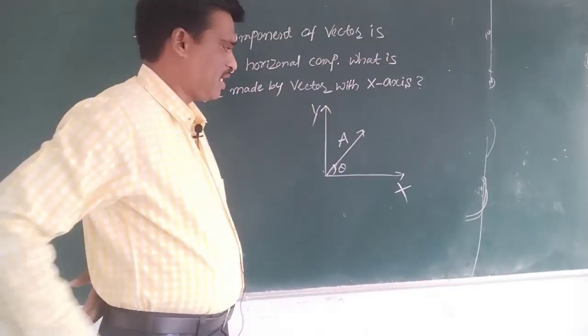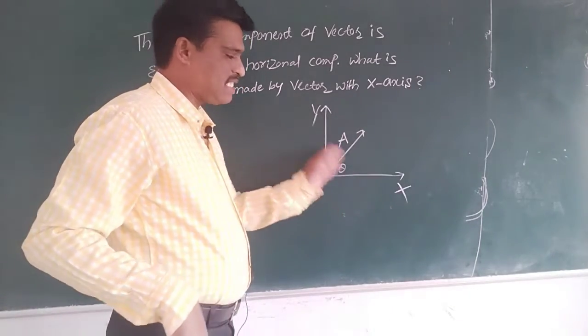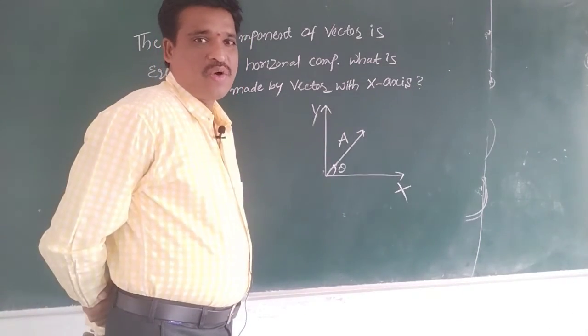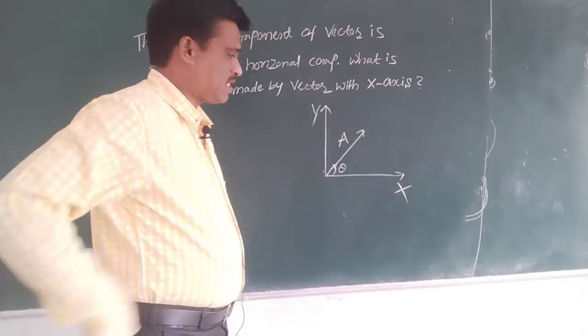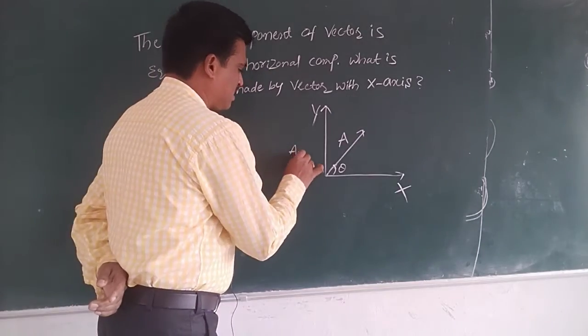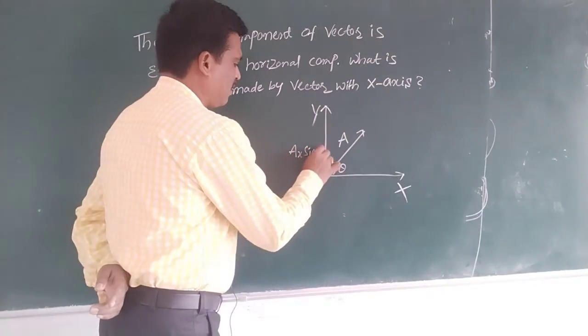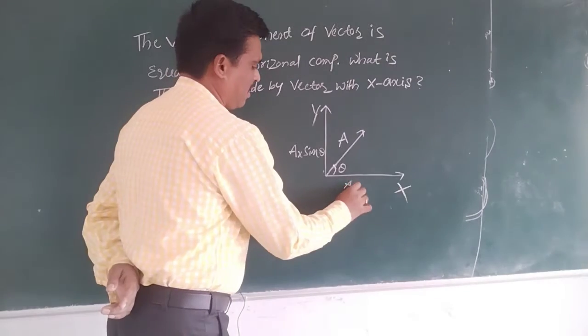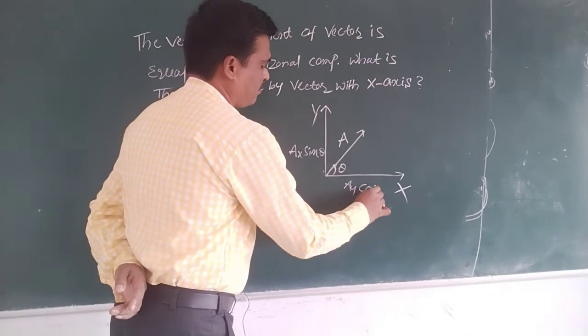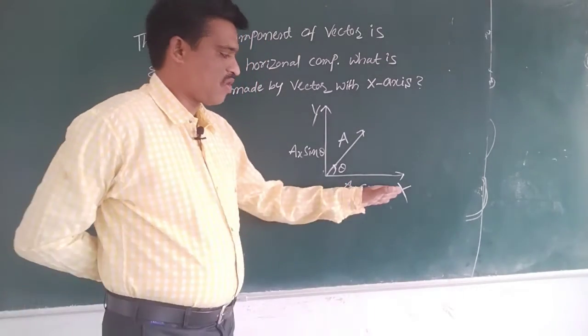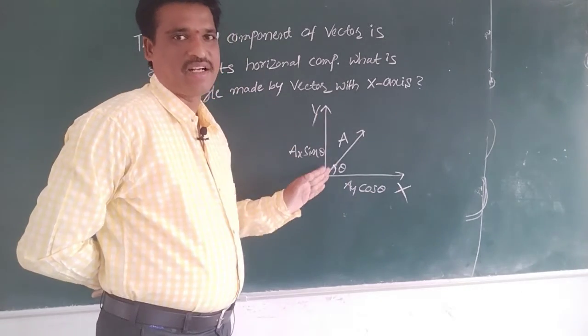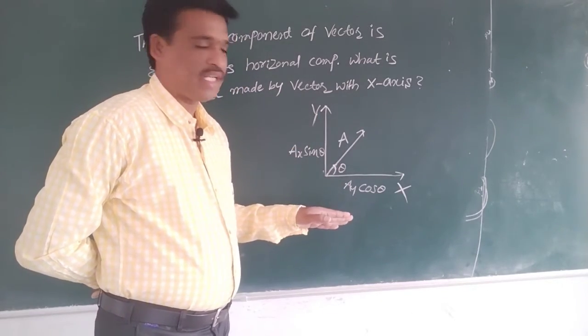Okay, the vector is at angle theta with X axis. So, AX is A sine theta, AY is A cos theta. This is the horizontal component, this is the vertical component.